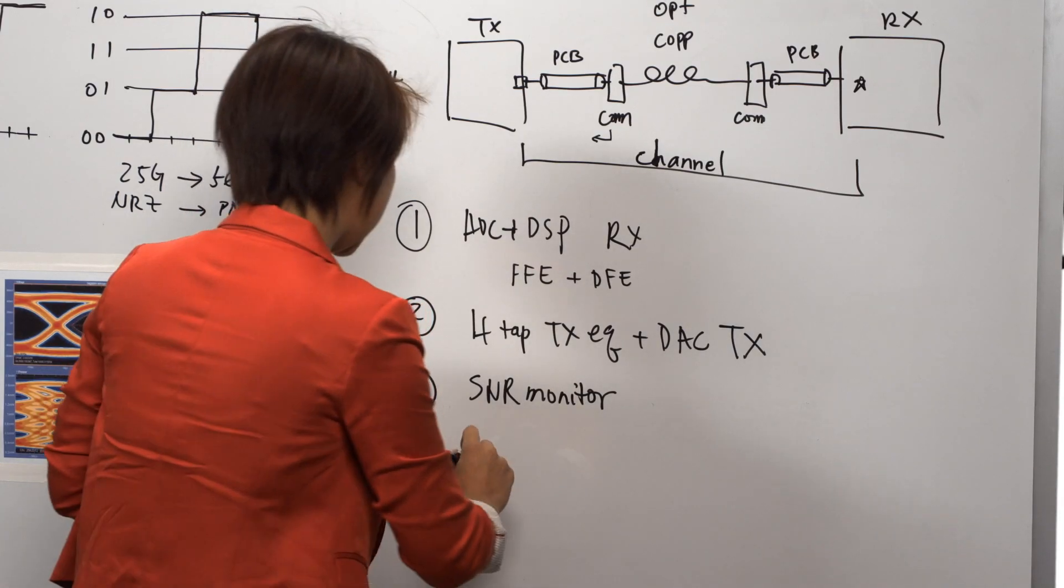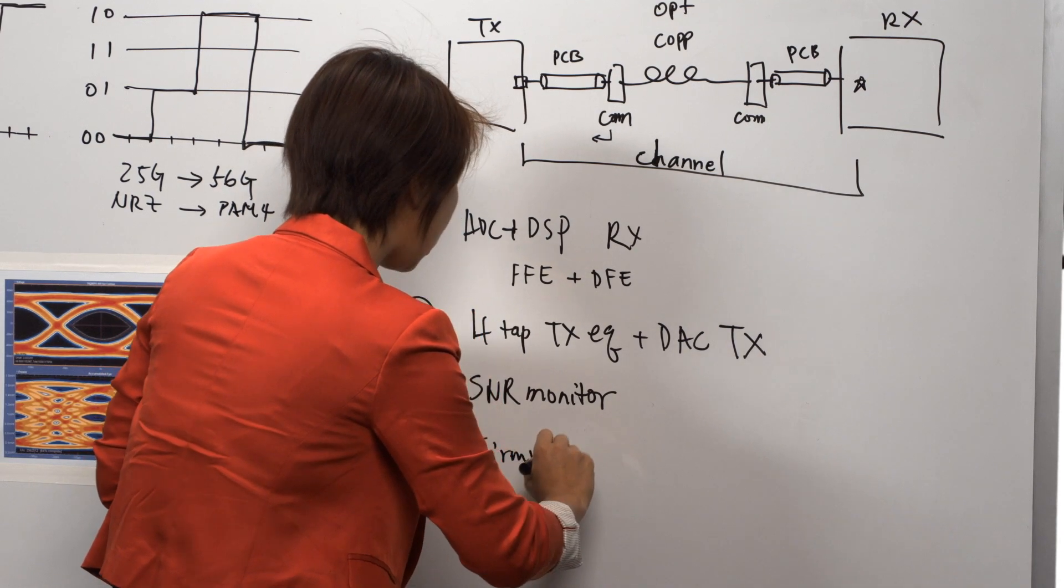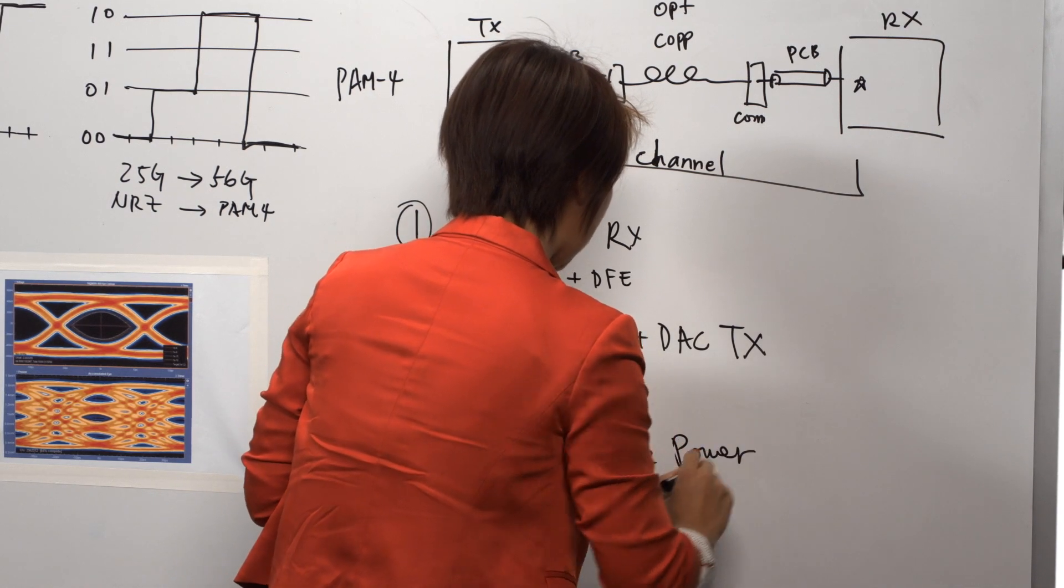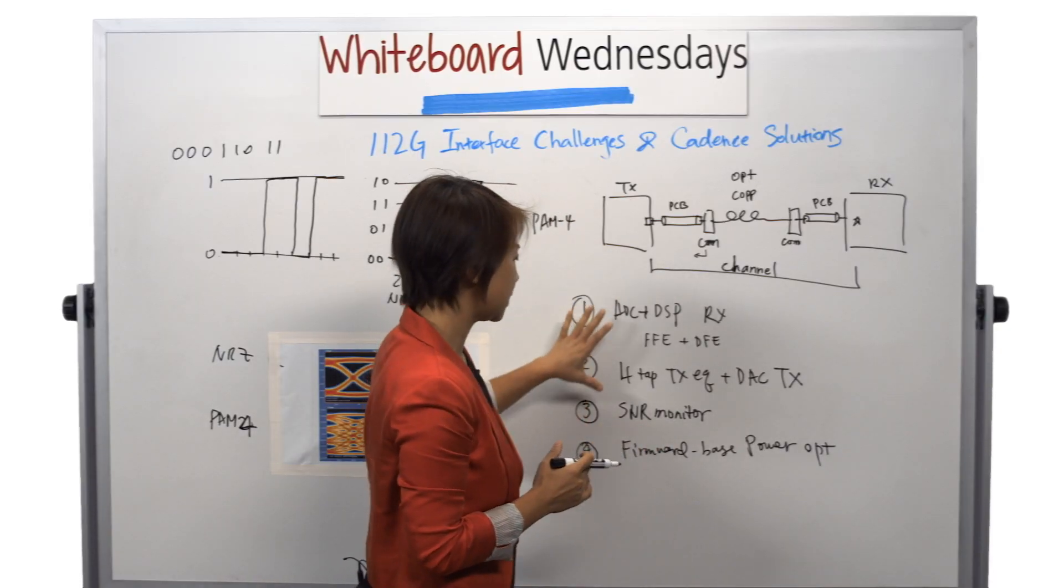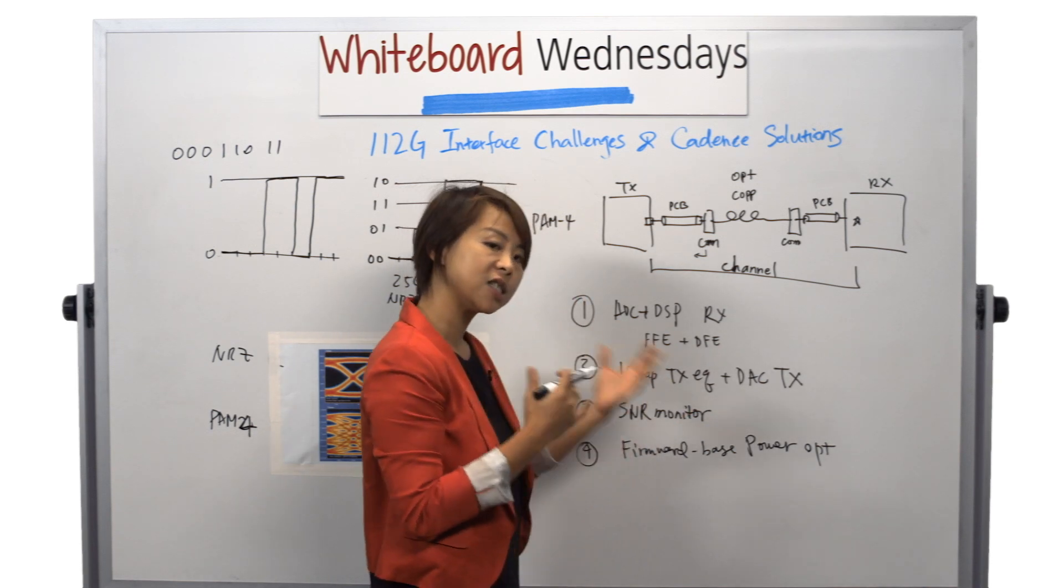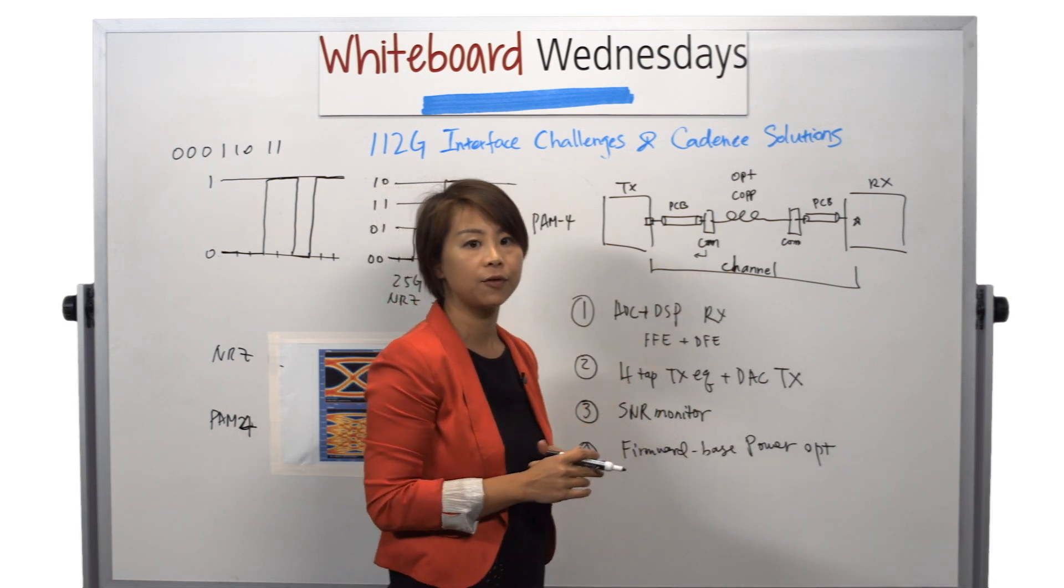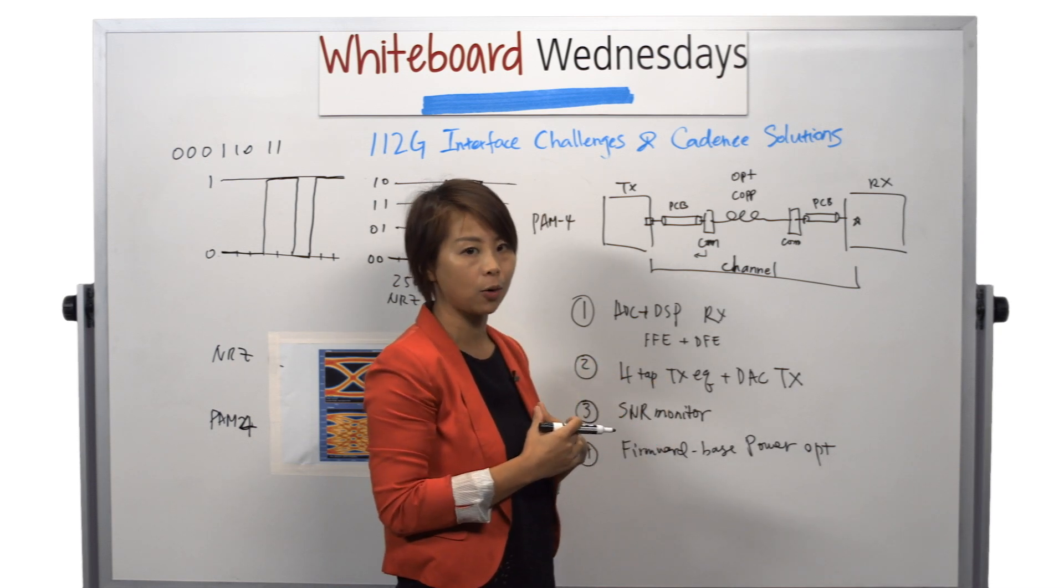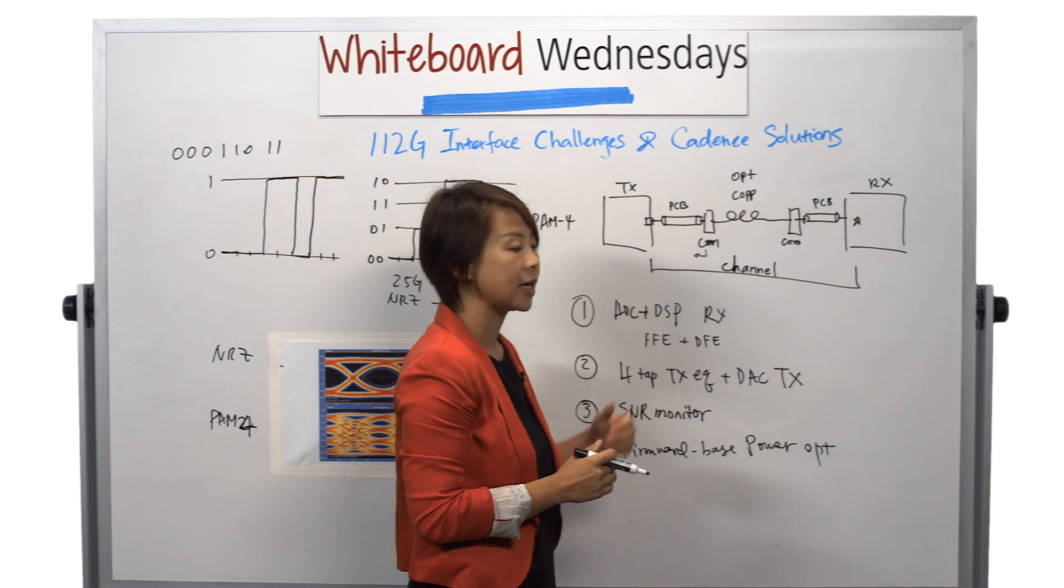And the last point is that we have a firmware-based power optimizer to optimize the power for the SerDes. Because when we have all these heavy equalization engines, the power is going to increase. So we need a smarter way to manage power. Based on the channel that's presented in front of SerDes, we can actually do a better job of trade-off performance and power and ultimately put the power into its optimal stage for its given channel.